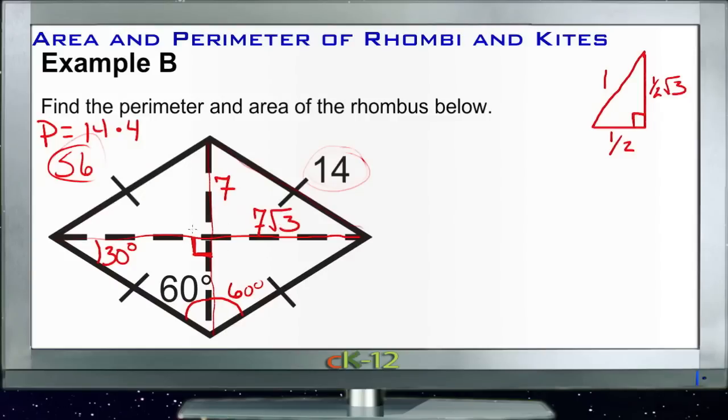So now we know what each of these little sections is. And if it's 7 square roots of 3 from the middle to the end, and another 7 square roots of 3 over here, then it's 14 square roots of 3 all the way across, so our D1 is going to be 14 square roots of 3. And if it's 7 from the top to the middle and another 7 from the middle on down, then our D2 is going to be 14.